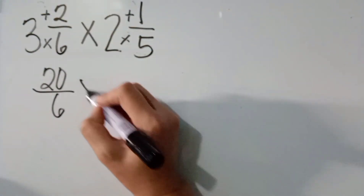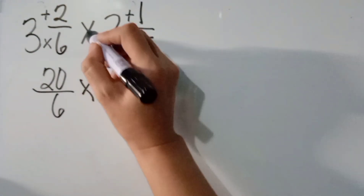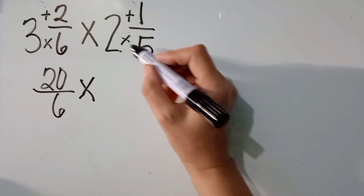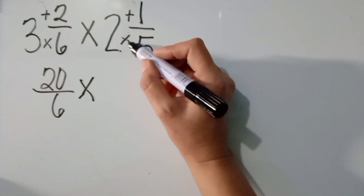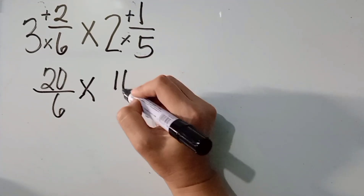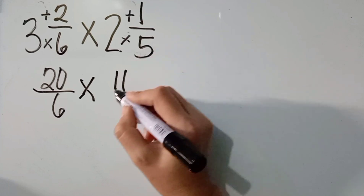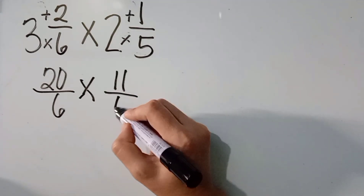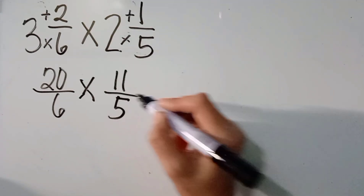Copy the operation. Next is 5 times 2, the answer is 10. 10 plus 1, the answer is 11. And then, just copy the denominator na 5.